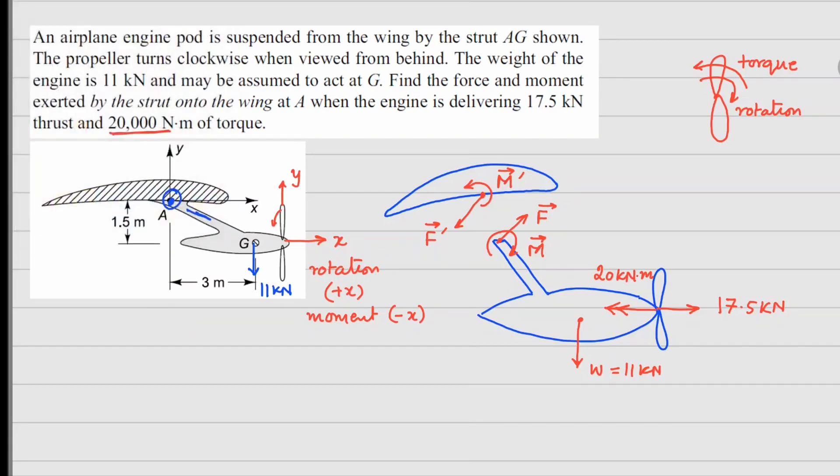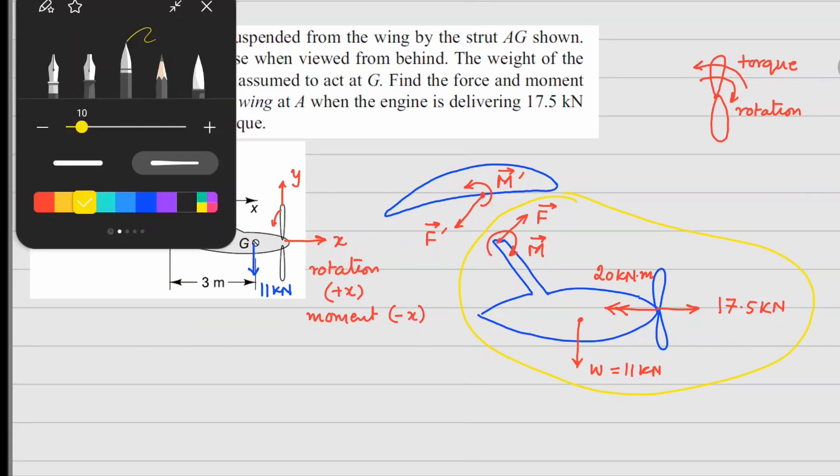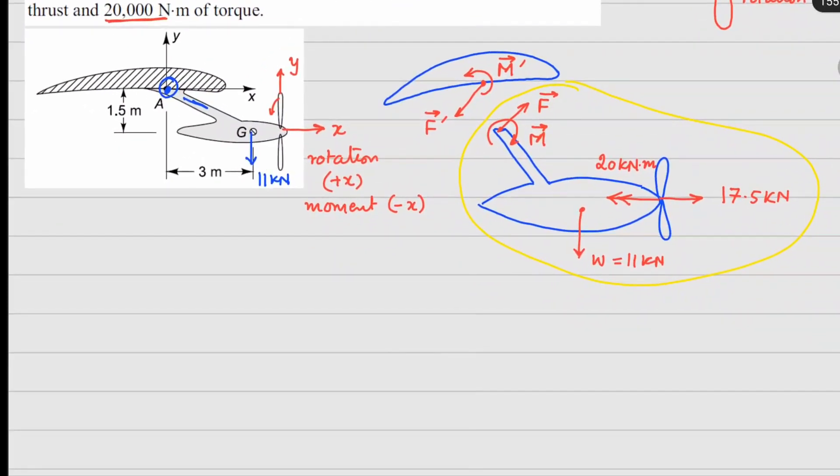So now what we will do is we will first analyze this part here and do the force and moment balance. If I do the force balance here, I can see force vector F, which is this one right here, plus 17.5 kN, and this is going to be in the i cap direction, and then minus 11 kN, which is going to be in the j cap direction, equals to 0.